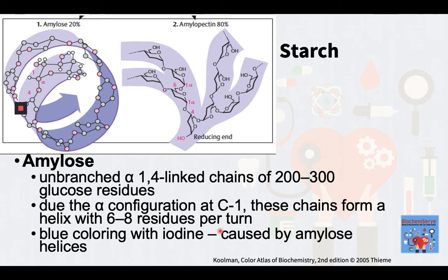Starch, a reserve polysaccharide widely distributed in plants, is the most important carbohydrate in the human diet. In plants, starch is present in the chloroplasts in leaves, as well as in fruits, seeds, and tubers. Starch is composed of two components. The first is amylose, which comprises around 20% of starch. Amylose consists of unbranched alpha-1,4-linked chains of approximately 200 to 300 glucose residues. Due to the alpha configuration at C1, these chains form a helix with 6 to 8 residues per turn. The blue coloring that soluble starch takes on when iodine is added is caused by the presence of these helices — the iodine atoms form chains inside the amylose helix.